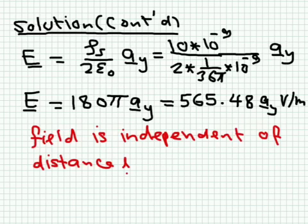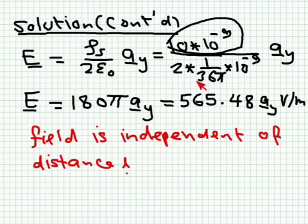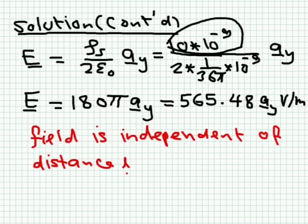Substituting Ru_s = 10 nC/m² and ε₀ = 1/(36π × 10⁻⁹): the 10⁻⁹ terms cancel, giving 18 × 10 = 180π in the â_y direction. Simplifying, we get 565.48 V/m in the â_y direction. The units of electric field are V/m. Again, the field is independent of distance, so even if y were at infinity the field would be the same — though in reality true infinite planes don't exist.